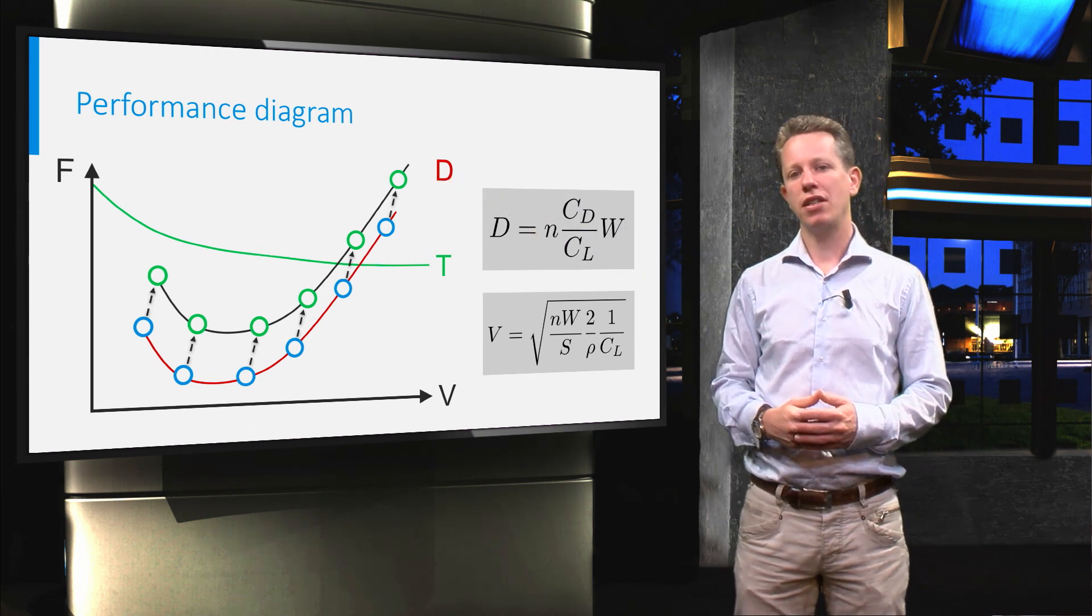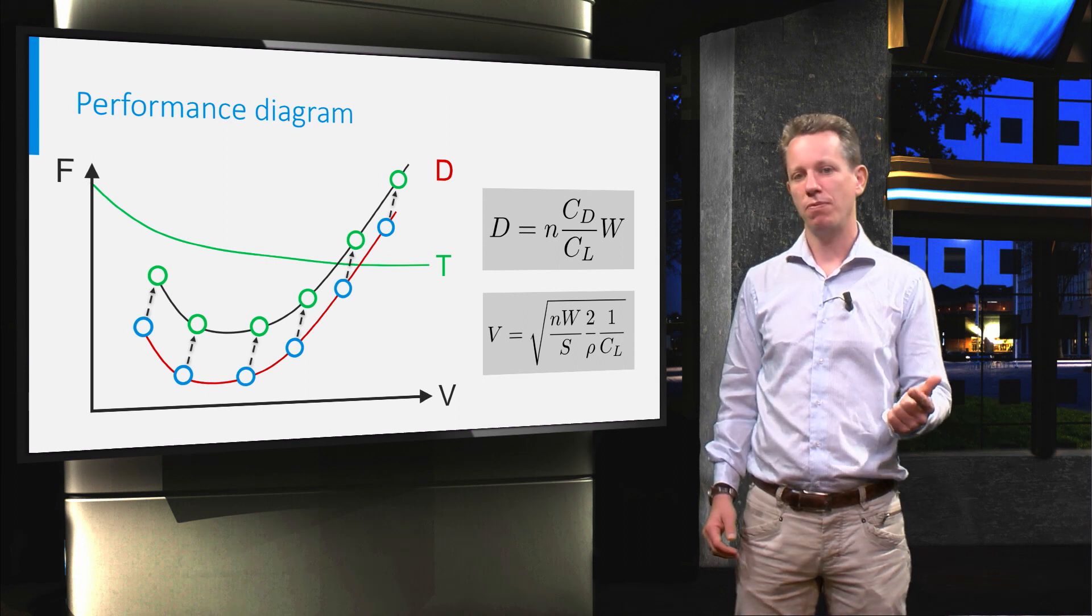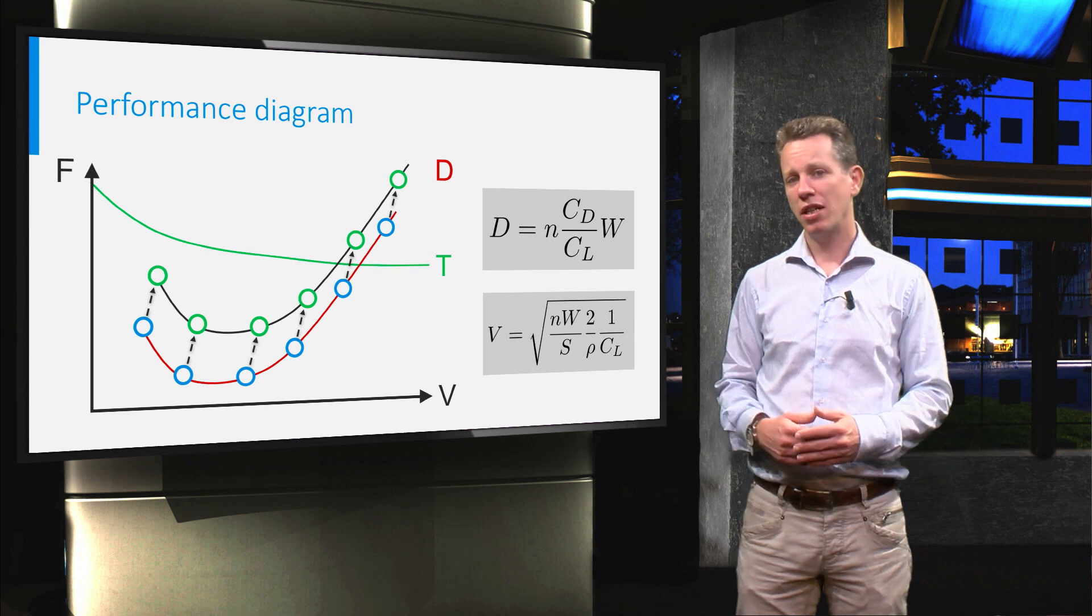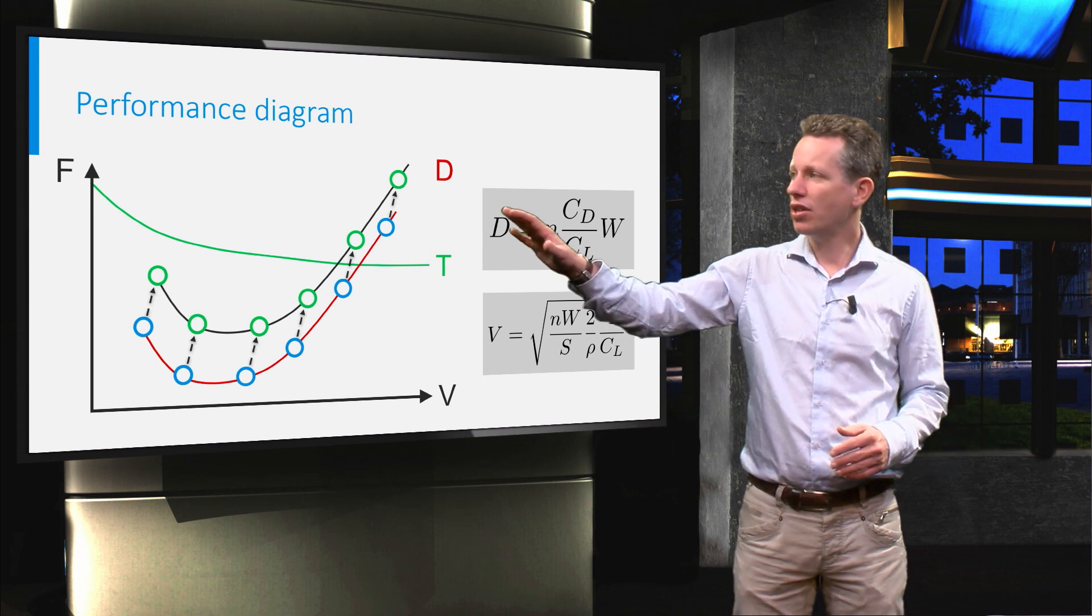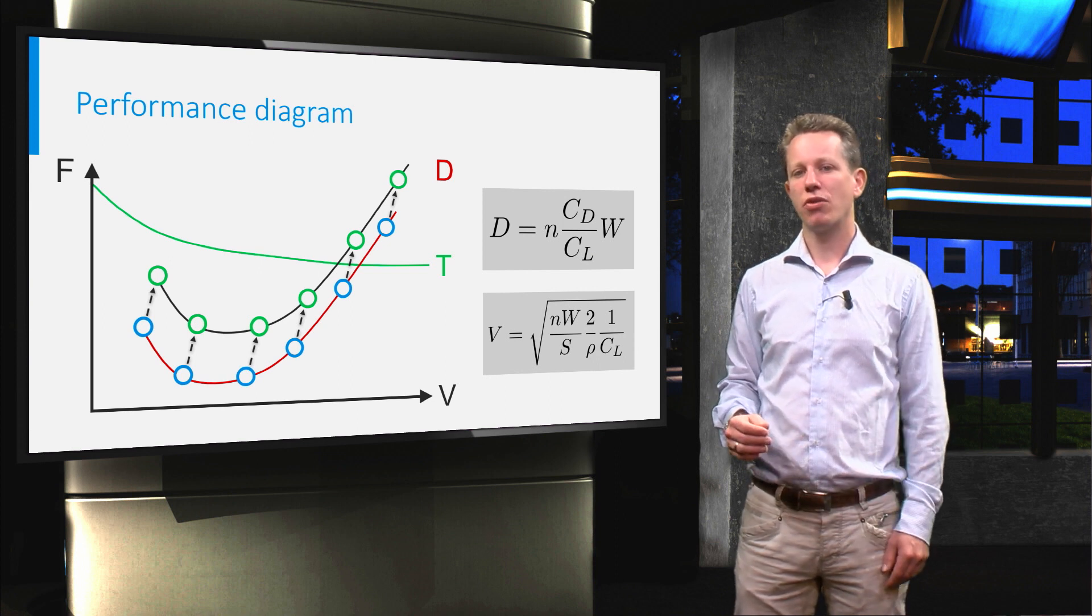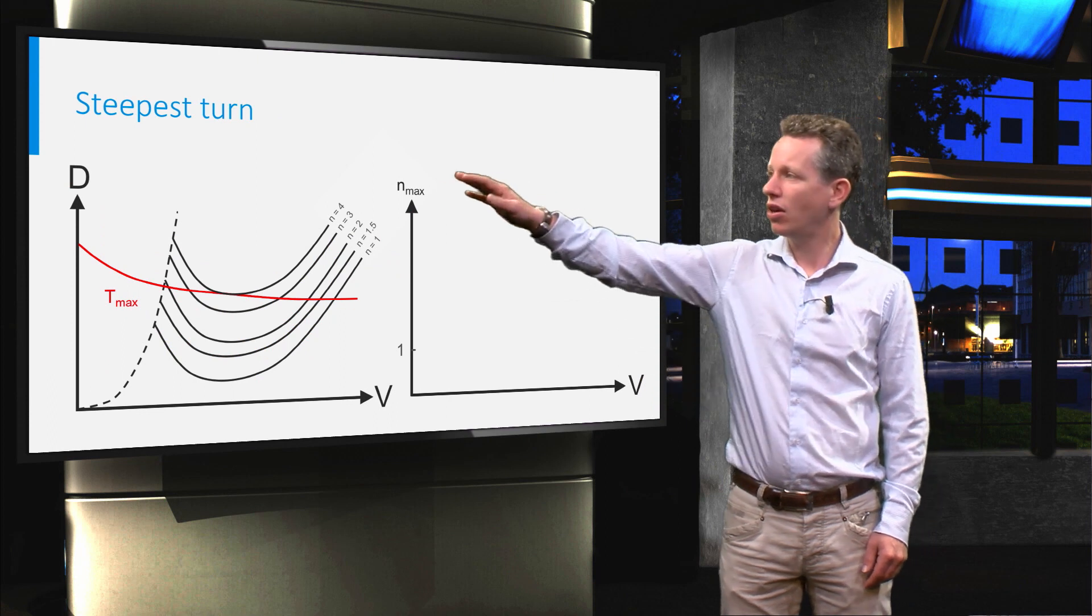So there are two factors limiting the turn performance: the aerodynamic limit and the propulsion system. In principle my objective is to determine the maximum load factor at each airspeed. Let's say we calculated the performance diagram for various load factors, and you can see the different drag curves over here.